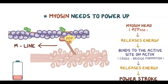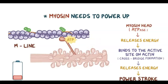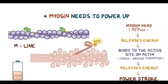The combined power strokes of all of the myosin heads leads to sliding of the thin filament along the thick filament. Once the power stroke is done, the ADP and phosphate ion leave the myosin head, and a new ATP molecule is able to bind instead. As soon as a new ATP is bound, the myosin head detaches from the active site. The new ATP is cleaved, and the energy is used to re-cock the myosin head to its high-energy position for the next power stroke.